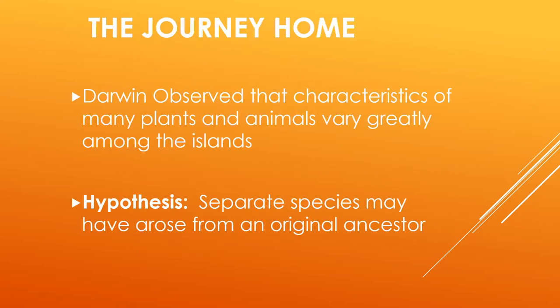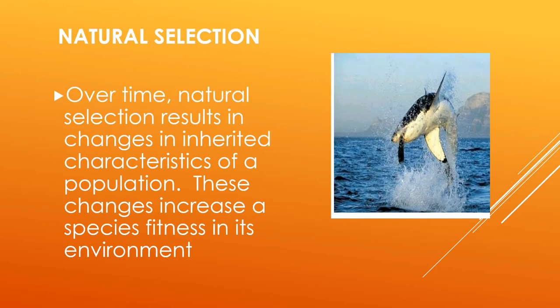During his journey home, Darwin observed that characteristics of many plants and animals varied greatly among the islands — from one island to another, the characteristics differed. Therefore, he hypothesized that separate species may have arisen from an original common ancestor.